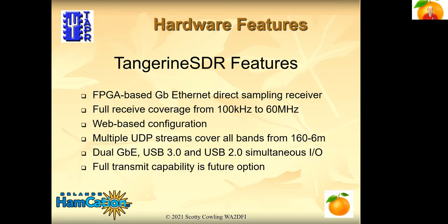It's an FPGA-based gigabit ethernet direct sampling receiver. We offer full receive coverage from 100 kHz to 60 MHz. Being direct sampling, we convert the entire band at the same time. There's a very easy-to-use web-based configuration program — no software to load, your browser does the heavy lifting. Multiple streams covering all bands from 160 through 6 meters. We additionally have a USB 3 port and a USB 2 port for expansion for things like RTL DVB dongles or an additional high-speed data channel using USB 3. Currently we're going to have receive capability, but transmit capability is a future option we are planning for.